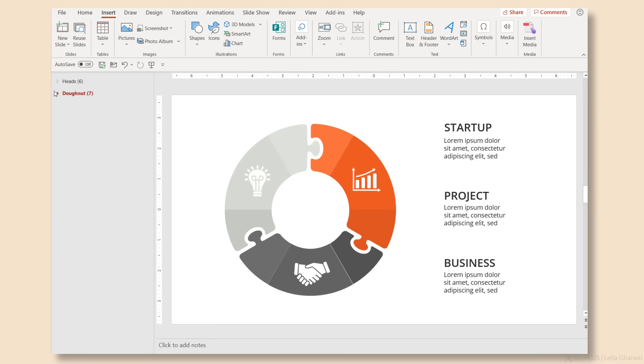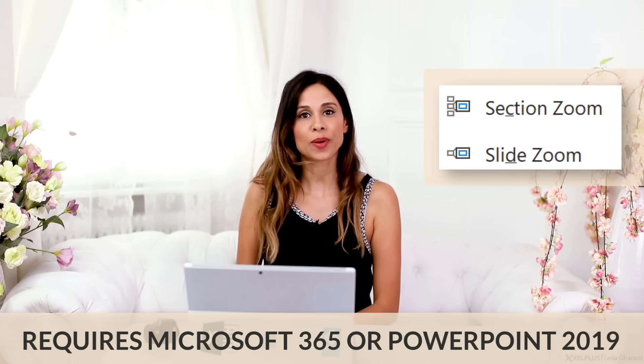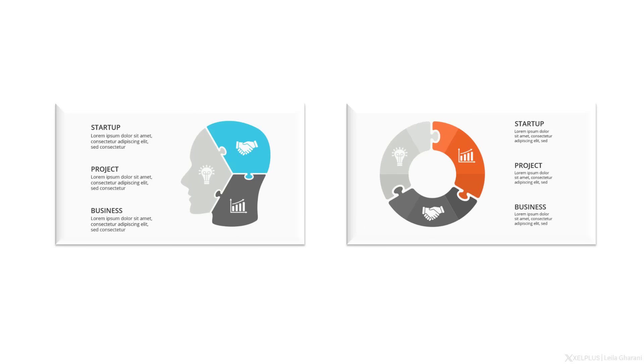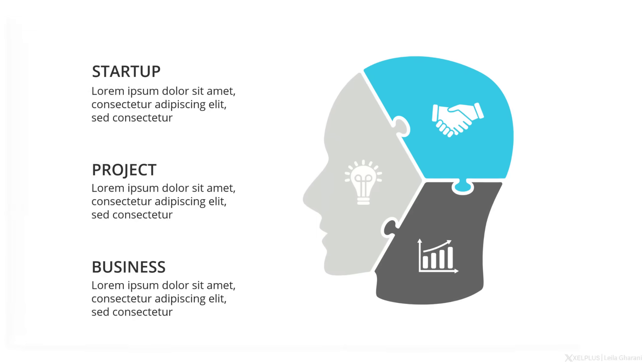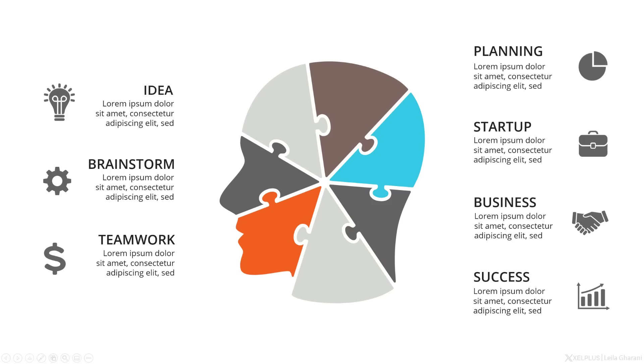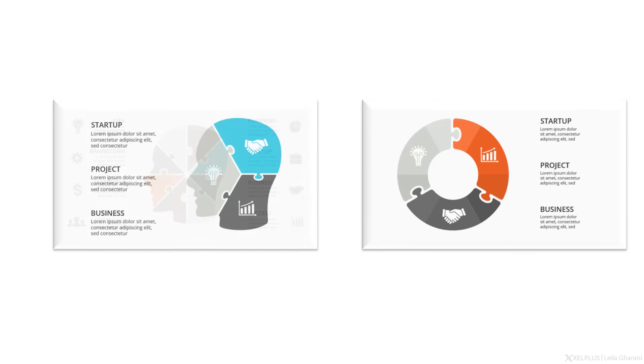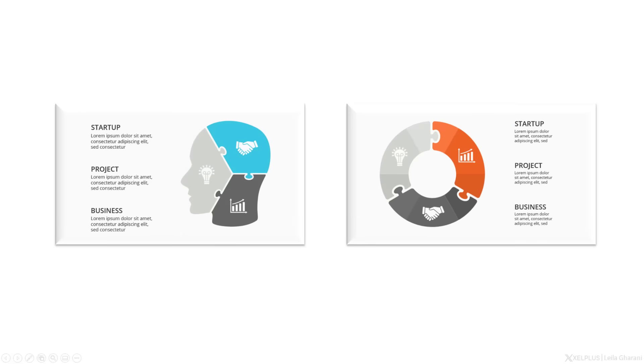Moving a section will bring all slides in it along with it. Another benefit is collaboration — if you're working on a presentation with colleagues, you can assign them a specific section, making it easier for them to find the slides they need to work on. If you have Microsoft 365 or PowerPoint 2019, you can also use PowerPoint's zoom feature to create a link to a section, and after presenting all slides in that section it jumps back to the section zoom. I have a separate video on PowerPoint slide zoom functionality — I'll link it up here.